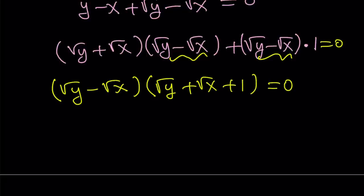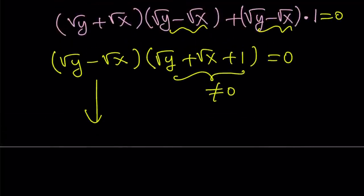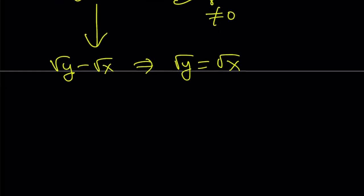Now take a look at this. We have a product, and each factor can equal 0. But square root of y plus square root of x plus 1 cannot equal 0 in the real world — because square root of y and square root of x are both greater or equal to 0, and adding 1 means you'll never get 0 from there. Unless you get into the complex world, but we're staying real here. This implies that square root of y minus square root of x equals 0, which implies square root of y equals square root of x. And since x and y are well-defined, this implies that y equals x.